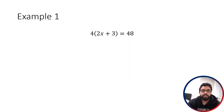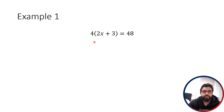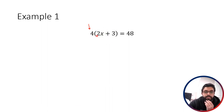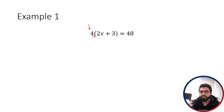So we've got this equation: 4 multiplied by (2x + 3) equals 48. I want to make a note that if you've got a number like this 4 sitting outside these brackets with no symbol in between — no addition, no subtraction, no multiplication, no division — it means multiplication.